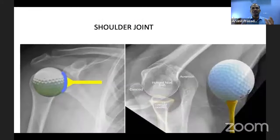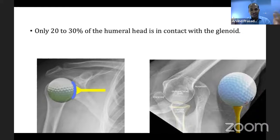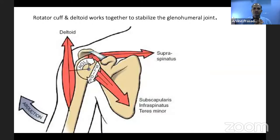The shoulder joint is a very mobile joint because of the articulation of the humeral head and the glenoid. Only about 20 to 30 percent of the humeral head is in contact with the glenoid, making it a hypermobile joint. At the same time, because of this high mobility, instability is also present, which is accommodated by the labrum, capsule, ligaments, and muscles — particularly the rotator cuff and deltoid — all working around the shoulder joint.